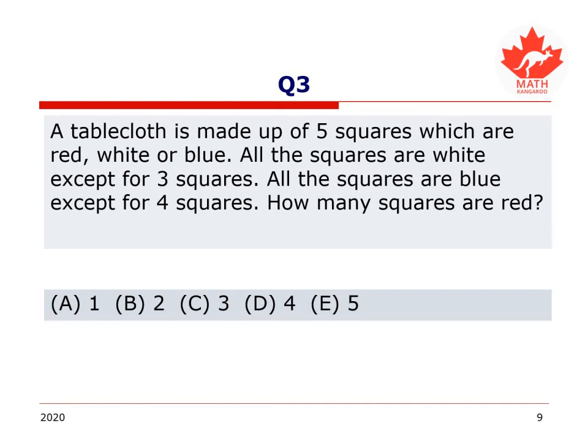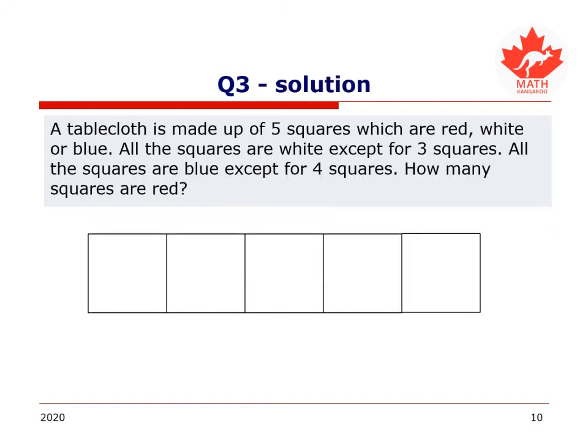Did you make some progress? Did you see some brilliant solutions? Let's see what I thought. Well, we have 5 squares. They are red, white, or blue. First, we're told that all the squares are white except for 3 squares. So that must mean that I have 2 white squares. The other 3 are not white. Then I'm told all the squares are blue except for 4 squares. That must mean I have a single blue square, 1 blue square, and the other 4 are not blue. How many squares are red? The squares can only be white, blue, or red, and we've colored in all the white and blue ones. So the rest are red. There's 1 and another 1. Two red squares in total. Did you get that right?